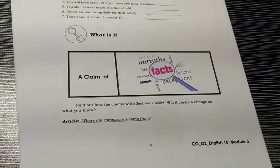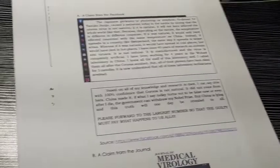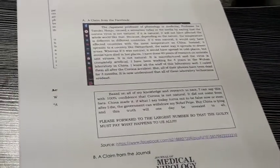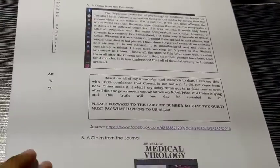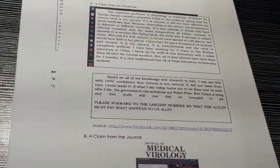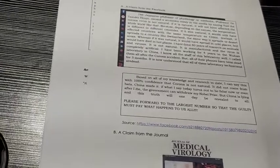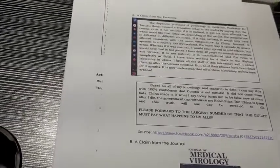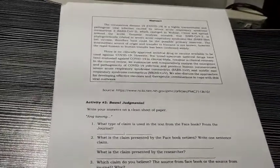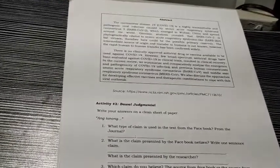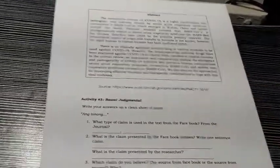The article is titled 'Where Did Coronavirus Come From?' We have a claim from Facebook — you will read that — and we have the source cited. Then, we have a claim from a journal: The Journal of Medical Virology, with an abstract and its source also stated. So, Activity number 3.